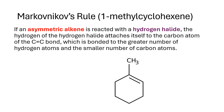Markovnikov's rule is basically: if an asymmetric alkene reacts with a hydrogen halide, the hydrogen of the hydrogen halide attaches itself to the carbon atom of the carbon-carbon double bond which is bonded to the greater number of hydrogen atoms and the smaller number of carbon atoms.